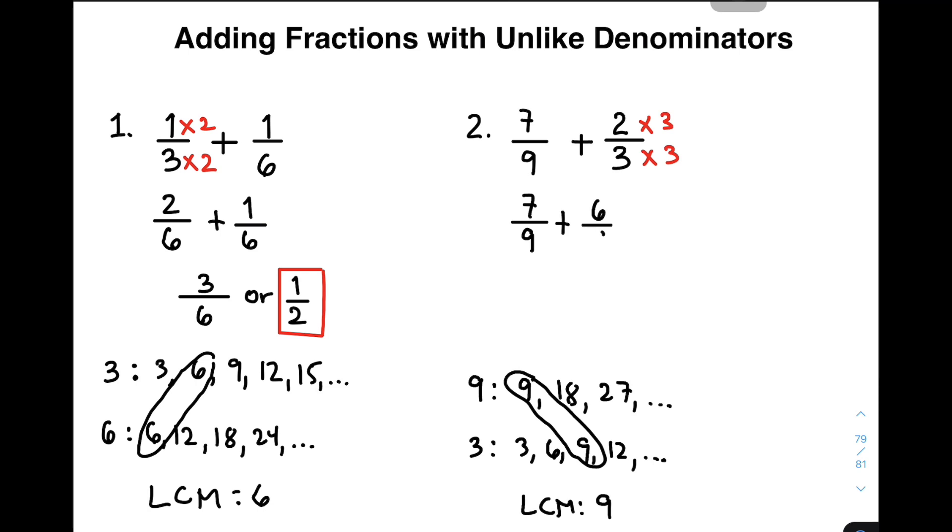So as you can see, the denominators are similar or like denominators. We can easily add them by copying your denominator, which is 9, and then add the numerators, 7 plus 6, that will give you 13. As you can see, that is an improper fraction. We can express that improper fraction as a mixed number.